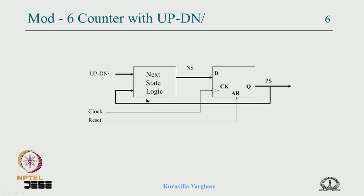If you want the 0 state to last at least one full clock period you need a synchronous reset — simply add a reset input to the truth table so that when reset is asserted the next state is 0. Upon the next clock, 0 comes in and is held for one clock period. Similarly, to load some value, say 3, you give a load control and a data input: when load is high the next state equals that input, and thereafter it counts based on up/down. This gives you a presetable counter.